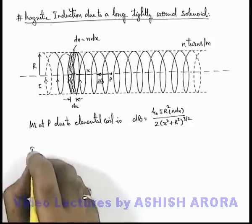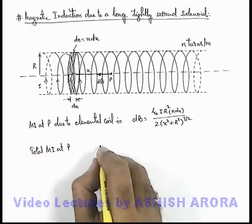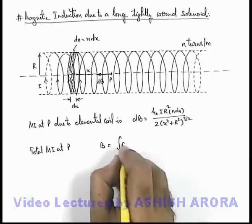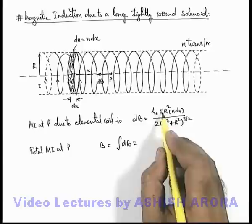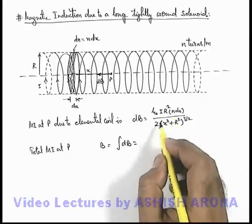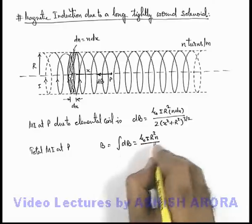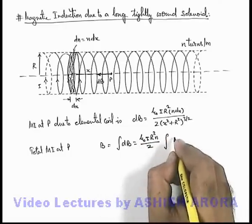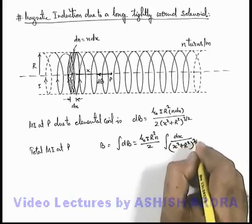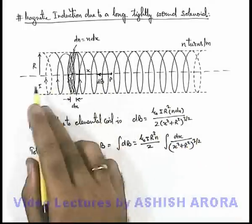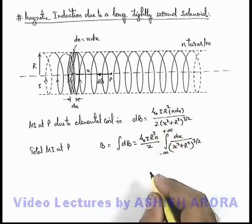So total magnetic induction at P can be given as B, which is the integration of dB. Here μ₀ i r² n by 2 can be taken out of the integration sign, so we have (μ₀ i r² n)/2, integrating dx upon (x² + r²)^(3/2). And as the solenoid is very long, we'll integrate it within limits from minus infinity to plus infinity.